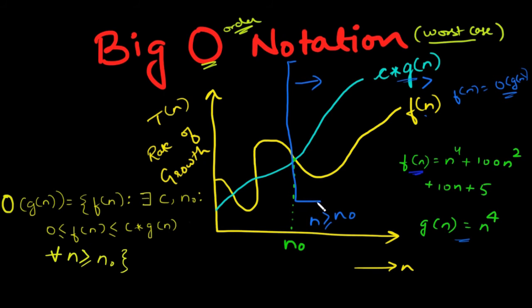A Big O notation is defined as O(g(n)) = {f(n): ∃ c, n₀} such that this condition is met: f(n) lies between 0 and the product of c and g(n) for all values of n greater than or equal to n₀.